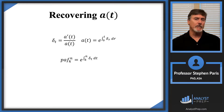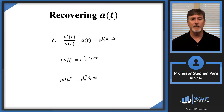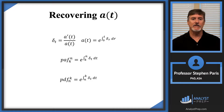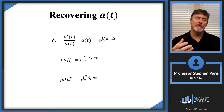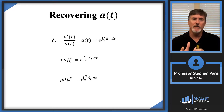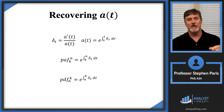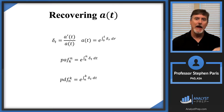Similarly, I could look at periodic discount factors instead. The periodic discount factor from N to K is e raised to the integral from N to K of delta_t dt. I want to point out why I use this notation. For the periodic accumulation factor going from time K to time N, you integrate from time K to time N in the exponent. For the periodic discount factor going from time N to time K, you integrate from time N to time K. You always integrate from wherever you're moving the money from to wherever you're moving the money to.